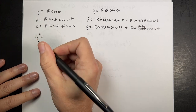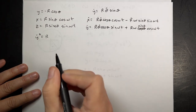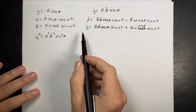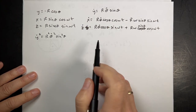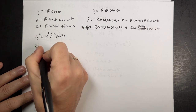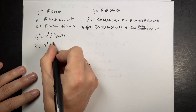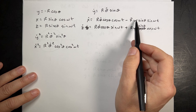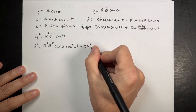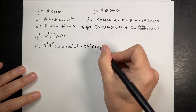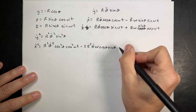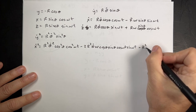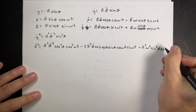y_dot squared is easy — since we're putting it into kinetic energy. y_dot squared equals r squared theta_dot squared sine squared theta. Now x_dot squared: squaring x_dot gives r squared theta_dot squared cosine squared theta cosine squared omega t, minus two r squared theta_dot omega cosine theta sine theta cosine omega t sine omega t, plus r squared omega squared sine squared theta sine squared omega t. And z_dot squared is: r squared theta_dot squared cosine squared theta sine squared omega t, plus two r squared theta_dot omega cosine theta sine theta cosine omega t sine omega t, plus r squared omega squared sine squared theta cosine squared omega t.